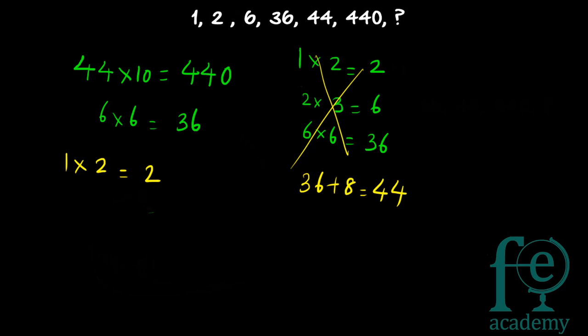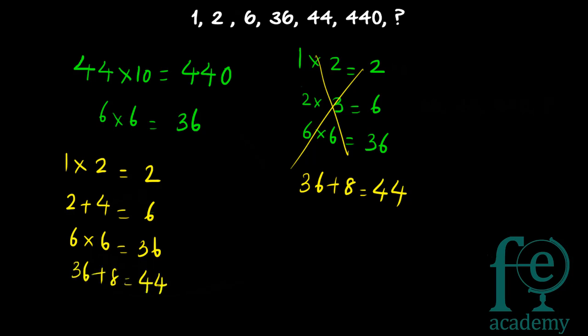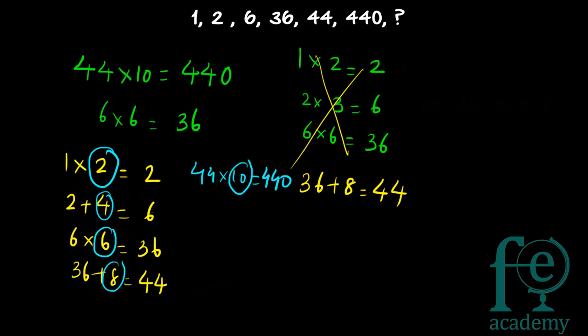So: 1 into 2 equals 2, then 2 plus 4 equals 6, then 6 into 6 equals 36, then 36 plus 8 equals 44, then 44 into 10 equals 440. A pattern is emerging: multiplication by 2, then addition by 4, then multiplication by 6, then addition by 8, then multiplication by 10. The numbers used — 2, 4, 6, 8, 10 — are themselves forming a series.